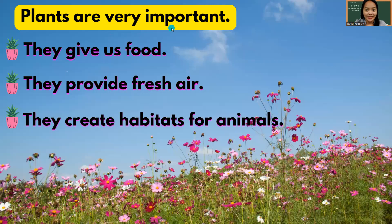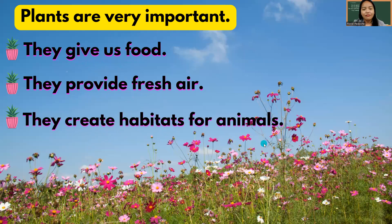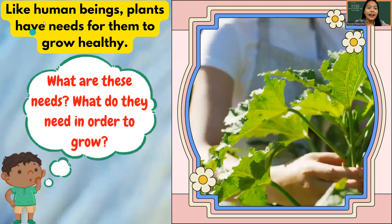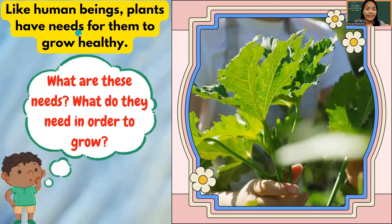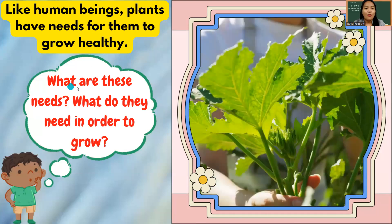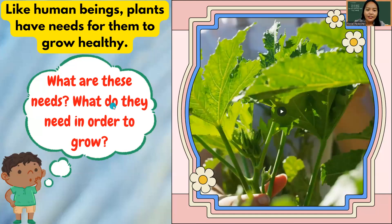Plants are very important. Why? Because they give us food — the fruits and the vegetables. They provide fresh air, the oxygen that we are breathing. They create habitats for animals. These habitats are in different places, especially in the forest. Like human beings, plants have needs for them to grow healthy. What are these needs and what do they need in order to grow?